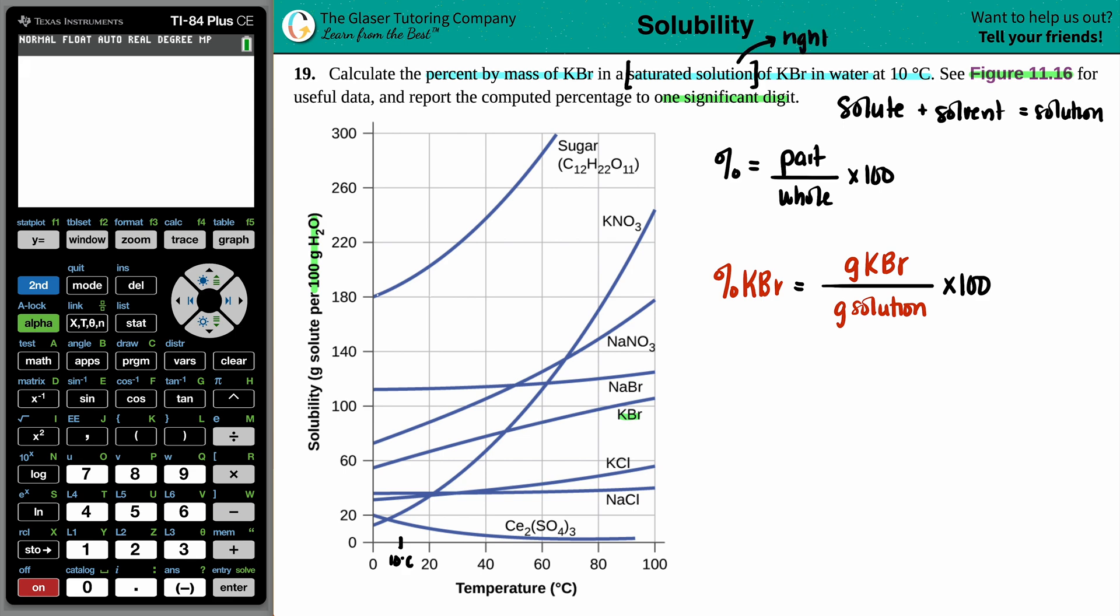So anytime that they say you have a saturated solution, you are on that line for any solution. If you were above, so here's my KBR line. If you were above the line, that's supersaturated. If you were below the line, that's unsaturated. So for sugar, being anywhere on this line is saturated. Anywhere above the line is supersaturated. Anything below the line is unsaturated for sugar.